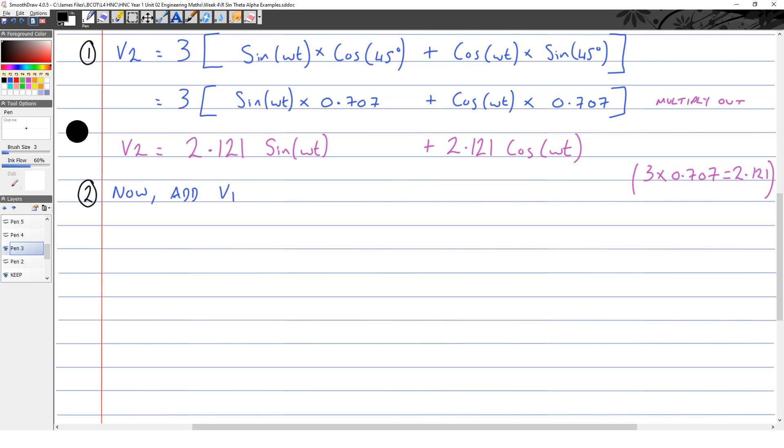Now we're going to add V1 back in. So V1 + V2 is 2 sin(ωt) + 2.121 sin(ωt) + 2.121 cos(ωt) from V2. Add the sine components together. V3 is equal to 4.121 sin(ωt) + 2.121 cos(ωt).